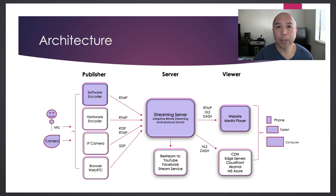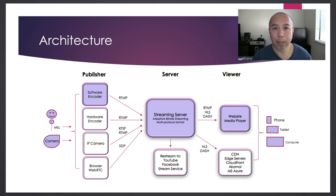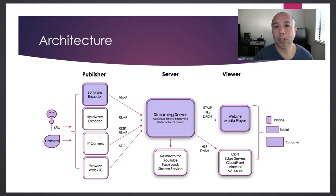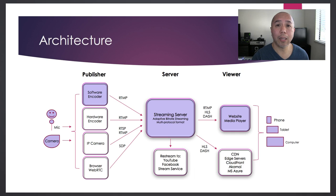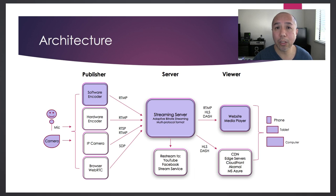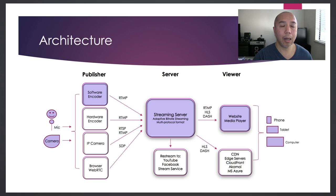The streaming server ingests RTMP connections as well as RTSP connections from IP cameras. One key feature is Adaptive Bitrate Streaming, or ABR. For example, if you have an incoming 1080p stream, you can configure the server to create additional renditions at 720p, 640, 480, 360, and so on — so one incoming stream gets transcoded into multiple resolutions and bitrates.